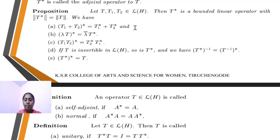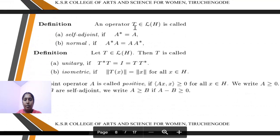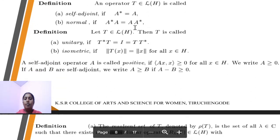Finally, T** = T. Next definition: self-adjoint. If self-adjoint condition is satisfied, we say self-adjoint: A* = A. Normal: A*A = AA*, that is the commutative property.